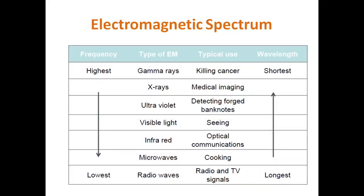As frequency decreases, wavelength increases. Gamma rays have the highest frequency, followed by X-rays, ultraviolet, and visible light. Microwaves and radio waves have the lowest frequency but the longest wavelength. High frequency corresponds to short wavelength.